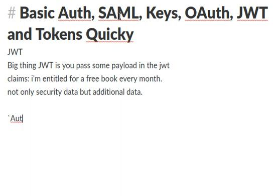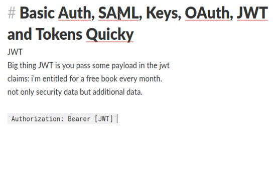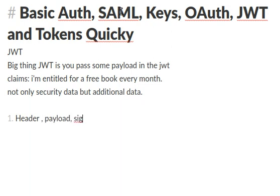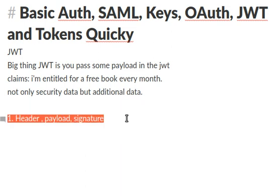JWT also uses the authorization header — you use 'bearer' and put the JWT inside. JWT has three parts: the header, the payload, and the signature. The signature uses HMAC SHA-256, which is the function used to hash the messages you send. You hash with the secret key and compute the signature. HMAC means hash with the secret key to generate signatures, so everyone knows it's coming from you.